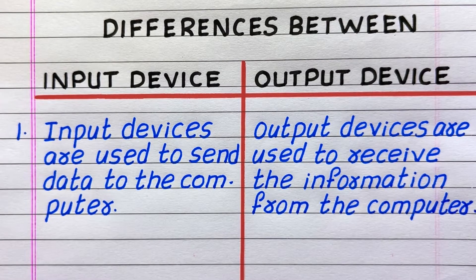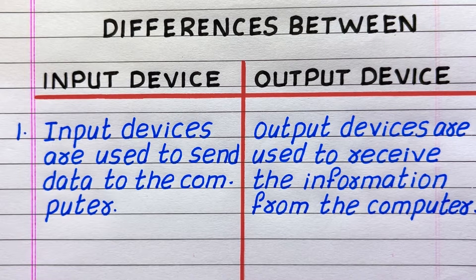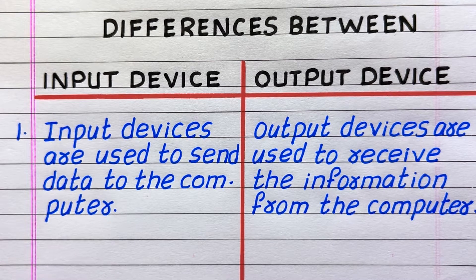First difference: input devices are used to send data to the computer, while output devices are used to receive the information from the computer.